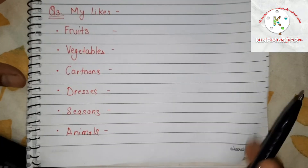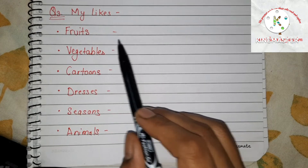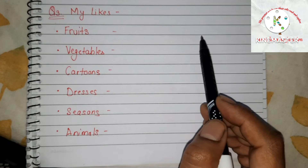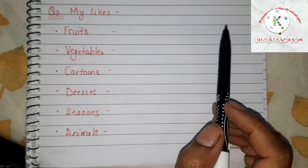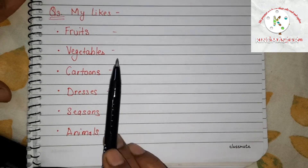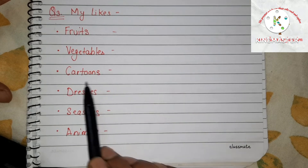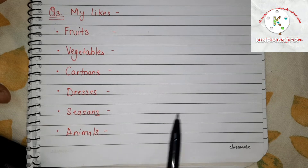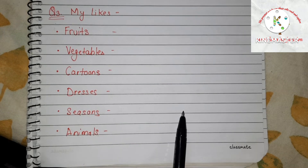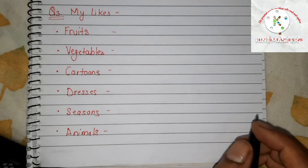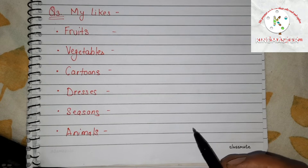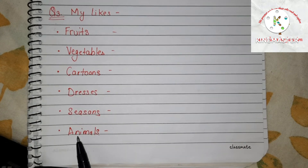Next we have 'My likes,' where the child has to write the things that he likes — fruits, for example watermelon and mango; vegetables; favorite cartoons; dresses she likes to wear; seasons, like some children like winters because they like snow, or summers because they can eat ice creams or go swimming; and favorite animal.